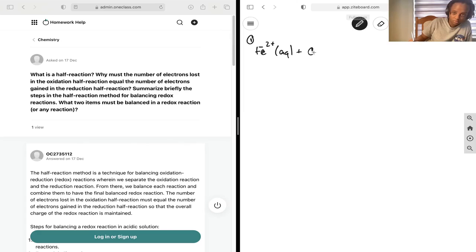We're going to be having a redox reaction between Fe2+ ions in aqueous solution plus Cr2O7^2- ions in aqueous solution to give Fe3+ aqueous plus Cr3+ aqueous.